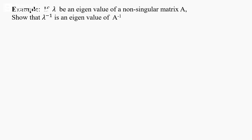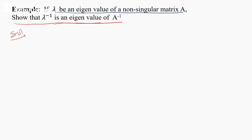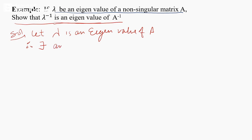Now we prove the property: if λ is an eigenvalue of a non-singular matrix A, then λ⁻¹ is an eigenvalue of A⁻¹. Let λ be an eigenvalue of matrix A. Then there exists a non-zero vector x such that Ax = λx.